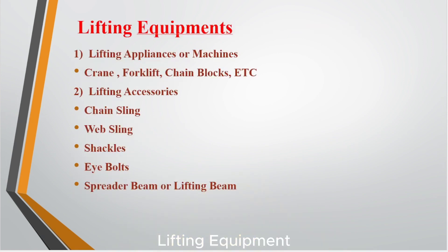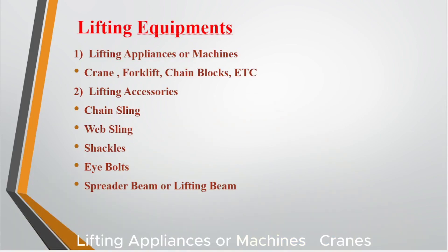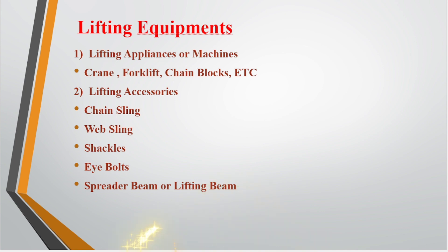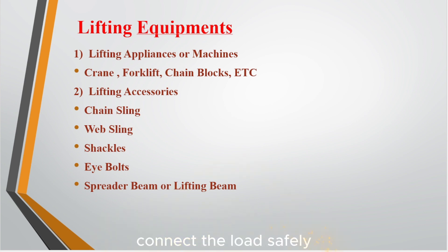Lifting equipment is divided into two main categories. Lifting appliances or machines: cranes, forklifts, chain blocks, hoists. Lifting accessories: chain slings, web slings, shackles, eye bolts, spreader beams. Appliances do the lifting, while accessories connect the load safely.